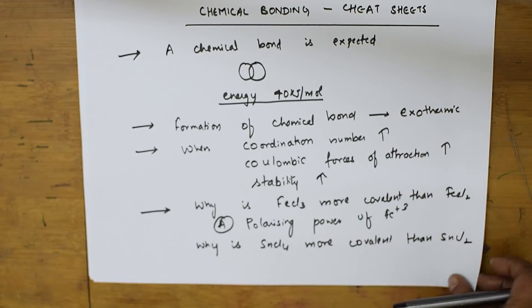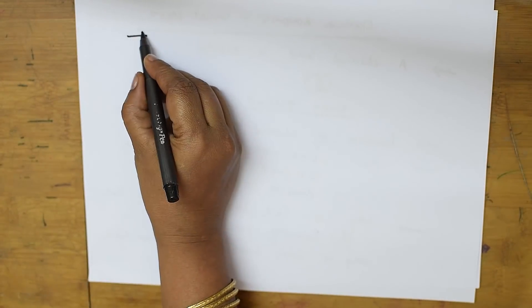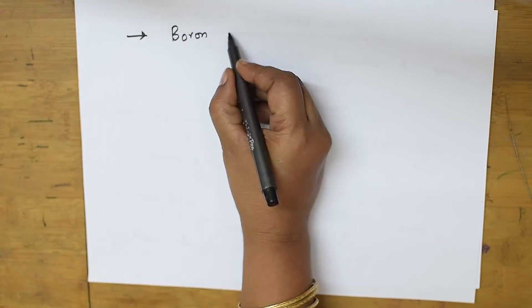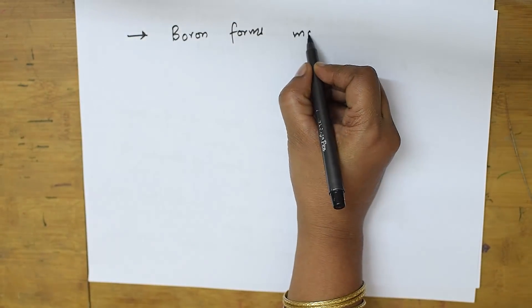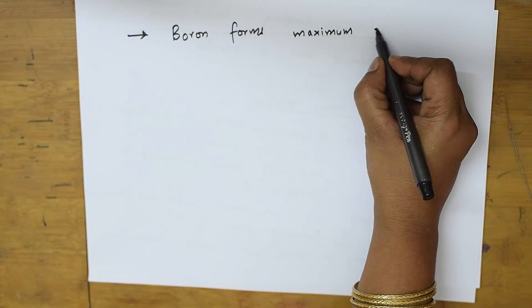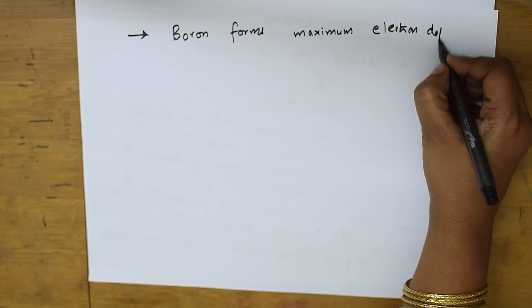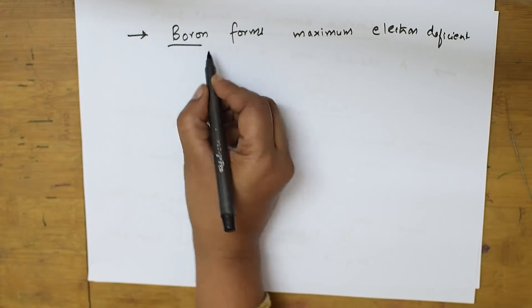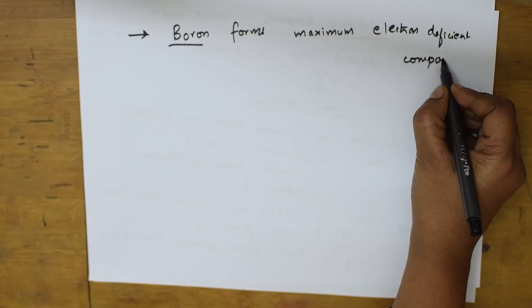Boron, as we know, is an electron-deficient compound. It forms the maximum number of electron-deficient compounds compared to any other element in the periodic table. Remember this: boron forms maximum electron-deficient compounds.